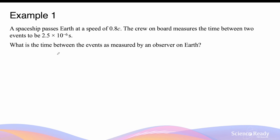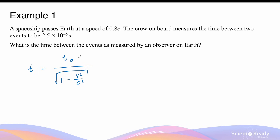This question examines the concept of time dilation due to the relativistic velocity of the spaceship at 0.8c. Time dilation is governed by the following equation: t equals t0 divided by the square root of 1 minus v squared divided by c squared. t0 refers to the time measured by an observer inside the same inertial frame of reference as the object, which is the spaceship traveling at a relativistic velocity.